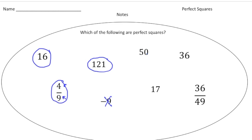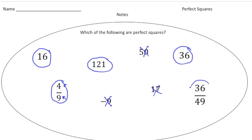Fifty is not a perfect square, because five times ten gives fifty, but five and ten are not the same number. The same applies to twenty-five and two, or fifty and one — so no. Seventeen is not a perfect square. Thirty-six absolutely is, because six times six is thirty-six. And thirty-six forty-ninths: we know thirty-six is a perfect square, and seven times seven is forty-nine, so thirty-six forty-ninths is absolutely a perfect square.